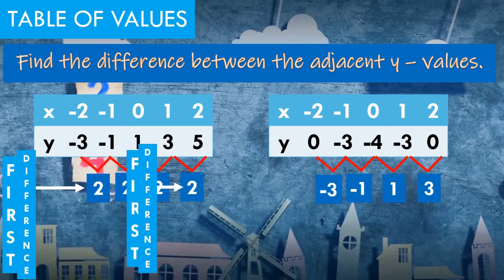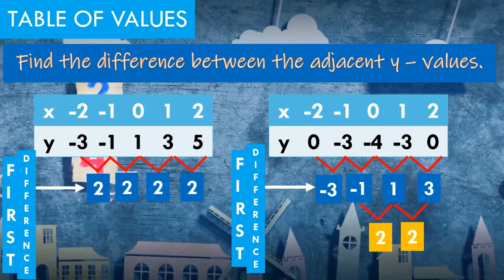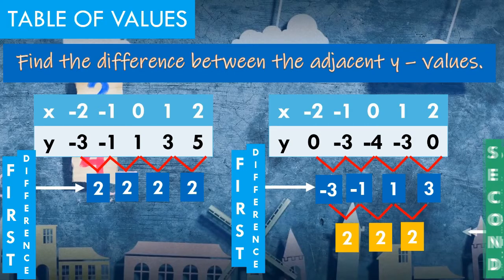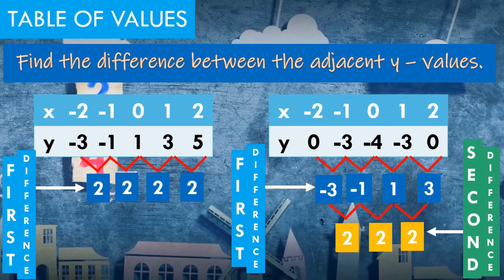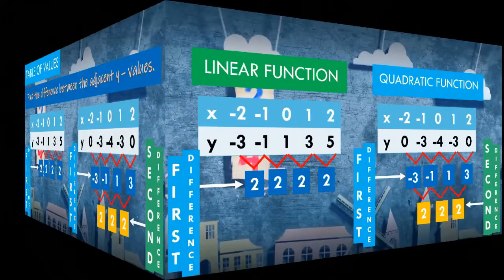As you can see, the first differences are different values. So when they have different values, we proceed to the second difference. So 3 minus 1 is 2, 1 minus negative 1 is 2, and negative 1 minus negative 3 is also 2. Since we have the same values on our second difference, we can now determine which table of values is linear and which is quadratic.